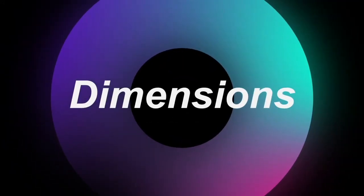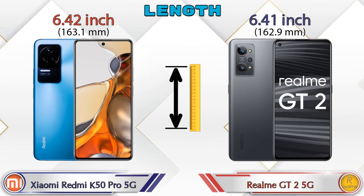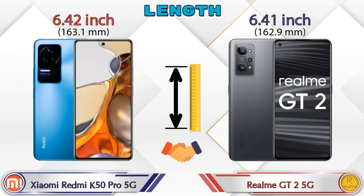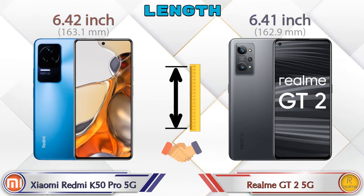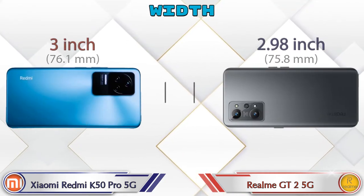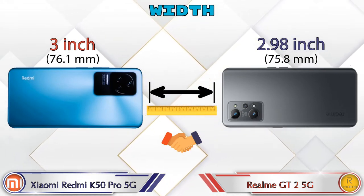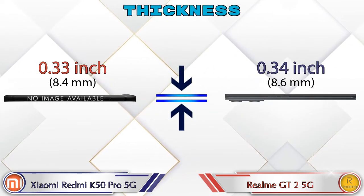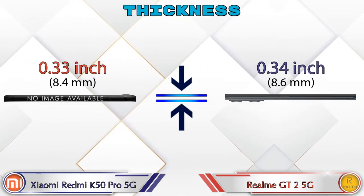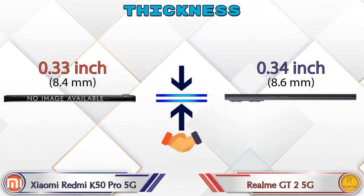Now let's check the dimensions. For length, the K50 Pro 5G is 6.42 inches and the GT2 5G is 6.41 inches — almost the same. Width: the K50 Pro 5G is 3 inches and the GT2 5G is 2.98 inches — also almost the same. For thickness, the K50 Pro 5G is 0.33 inches and the GT2 5G is 0.34 inches, which is almost similar.